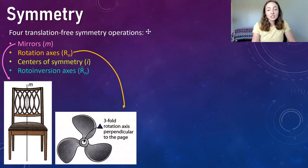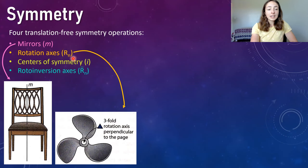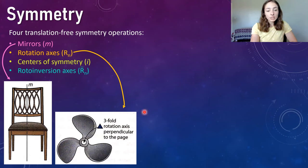There are also rotation axes, and as we go through these you can see there are little symbols or letters that denote what symmetry operation we're talking about. Mirrors are shown by M, and rotation axes are shown by R-N, where R denotes it's a rotation axis and N is the number — for example, three for a threefold rotation axis.